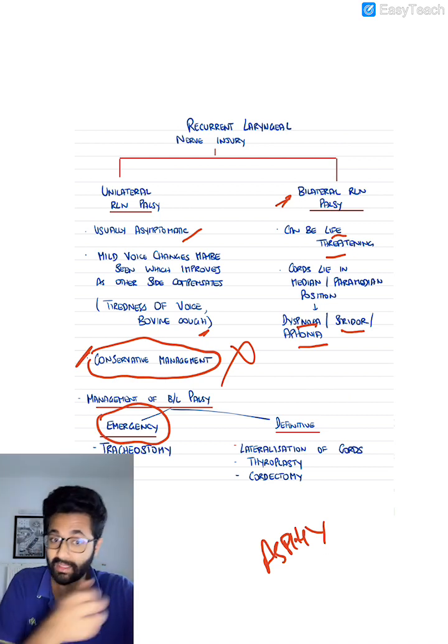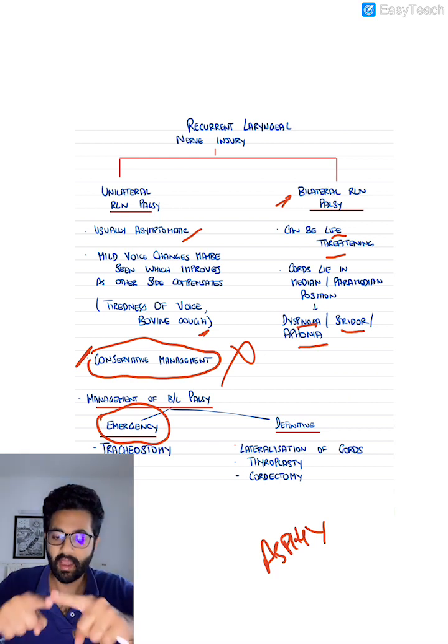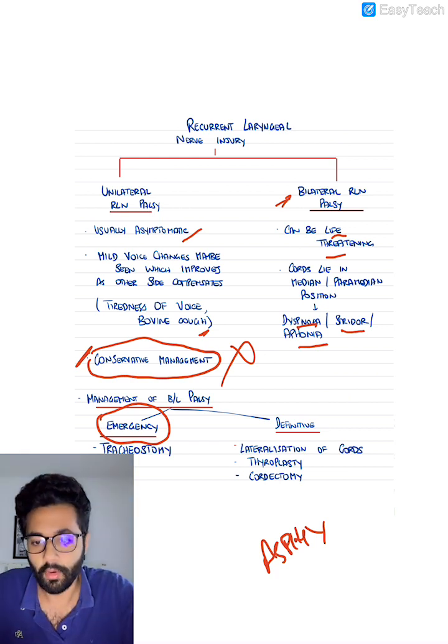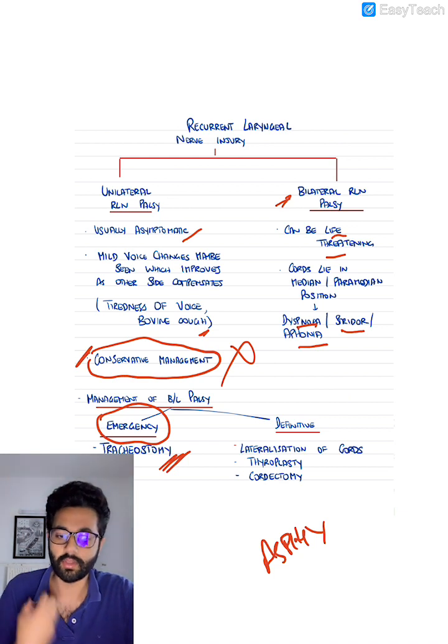So whenever you realize that there is a bilateral recurrent laryngeal nerve injury and the vocal cords are not opening anymore, then you need to do an emergency tracheostomy to maintain the airway to make sure the patient is able to breathe and also to prevent aspiration.